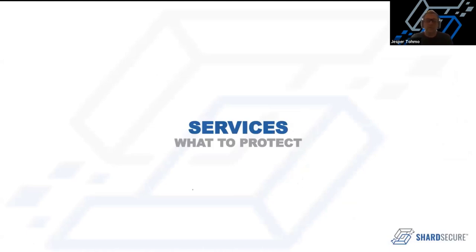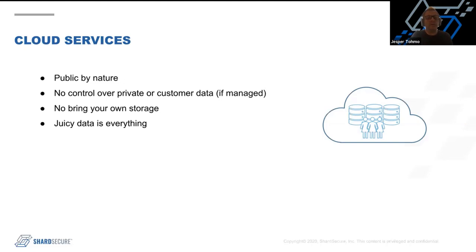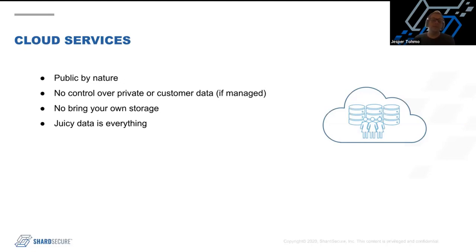Looking at what types of services you want to protect: cloud services are the main use case we've seen, mainly because they're public by nature. As easy as it is to set up an S3 bucket, it's also easy to check the wrong box and open up the bucket for access by anyone — and that type of failure does happen. There are also regulations especially in Europe like the Cloud Act and GDPR, and in the US there are other regulations that might prevent you from storing sensitive data in the cloud. This is a way to actually get the data to a sensitivity level where you can store it up there and still use those types of services.